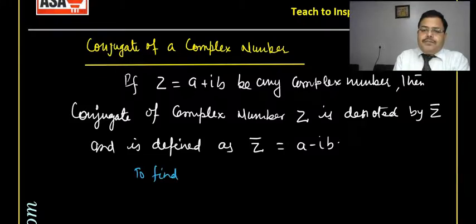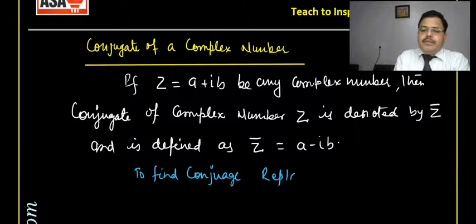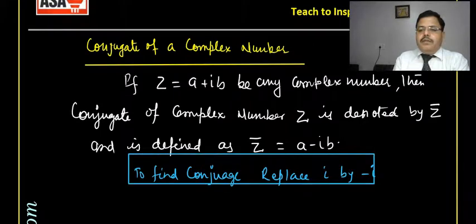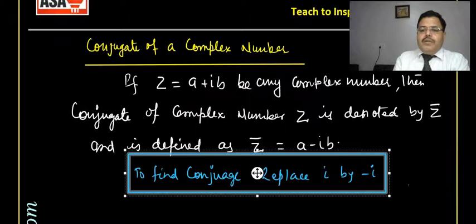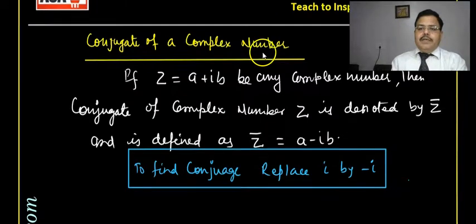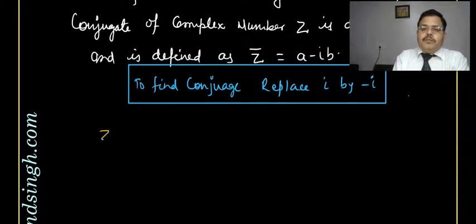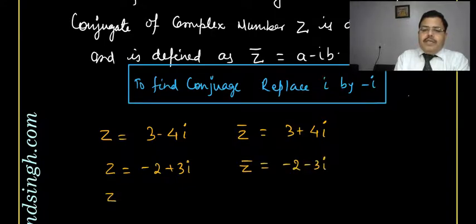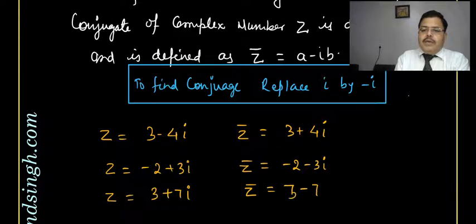To find conjugate of complex number, replace iota by minus iota everywhere. For example, if z equals 3 minus 4 iota, then z-conjugate is 3 plus 4 iota. If z equals minus 2 plus 3 iota, then z-conjugate is minus 2 minus 3 iota. If z equals 3 plus 7 iota, then z-conjugate is 3 minus 7 iota.